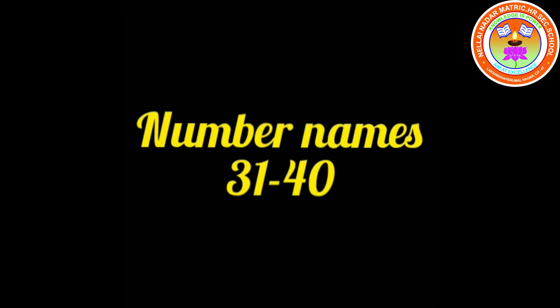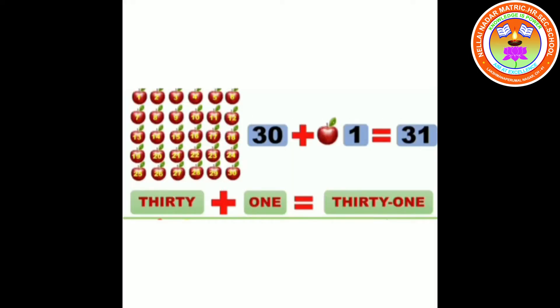Shall we start now? 31. 30 plus 1 equals 31. T-H-I-R-T-Y, thirty. O-N-E, one. Thirty-one.